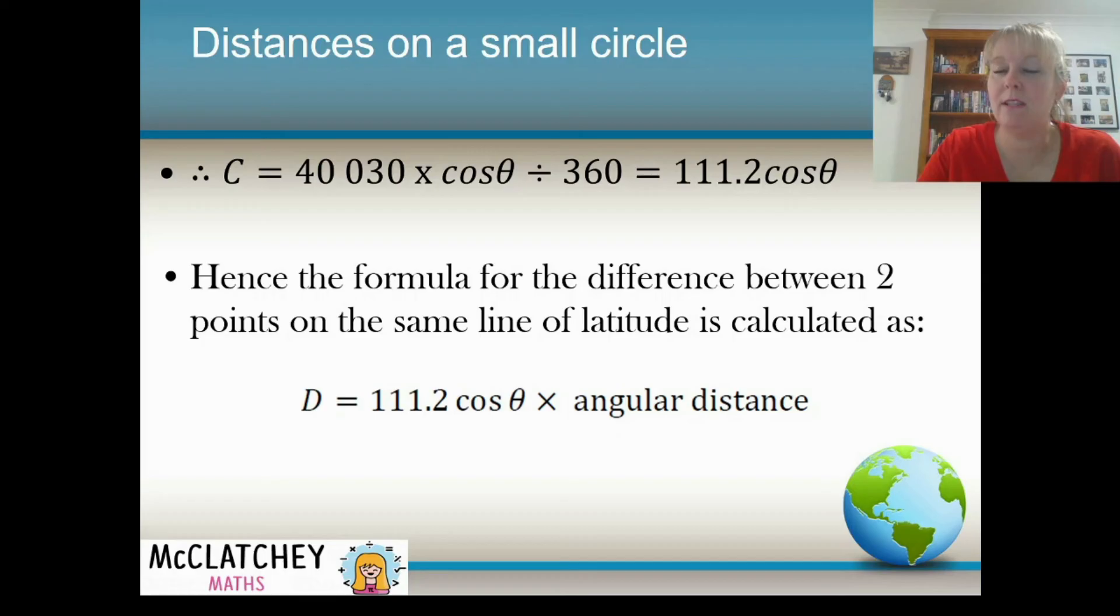The distance between two points on a line of latitude, a small circle, is 111.2 times cosine theta times the angular distance. Now you might be thinking, oh, I still don't know what theta is. And I still don't know what the angular distance is. Well, cosine theta. The theta is your distance in angles from the equator to your line of latitude. It's basically your latitude degrees. So if you are 30 degrees north, you're 30 degrees north of the equator, that means your value for theta is 30. The angular distance is the difference in the longitude values of your two points. And that will help you work out the distance between the two points on your small circle.